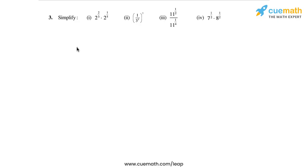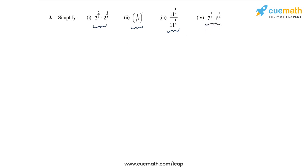In question 3, we have to use the laws of exponents to simplify exponential expressions. In the first one we have a product of exponential terms, in the second one we have an exponential term raised to another power, in the third one we have a quotient of exponential terms, and the fourth one is also a product of exponential terms. Let me quickly write out the laws of exponents that we will use.